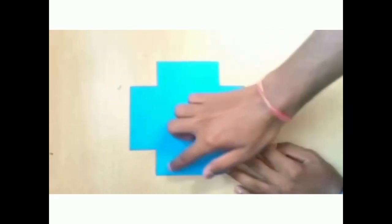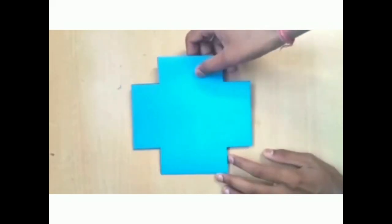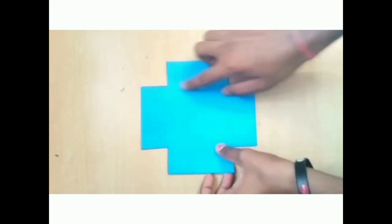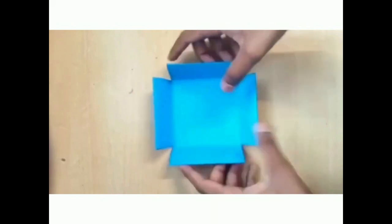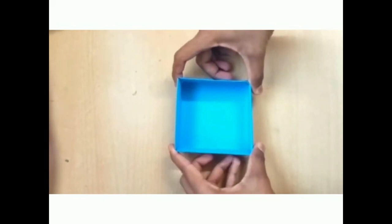After cutting this box into four sections we can see like this shape of this box. Now we will fold all sides to get a box. After folding its sides you can see we got a proper shape of a box.